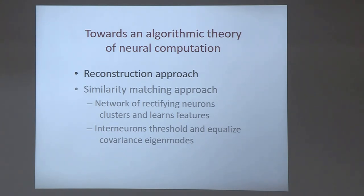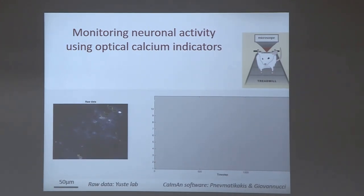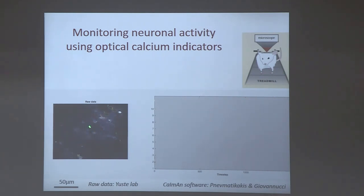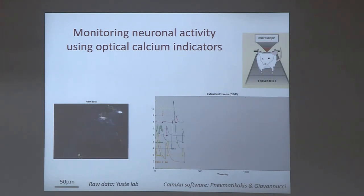To get us started, I want to show some experimental data. This is a video of the activity of neurons in the brain of a live behaving animal running on a treadmill in virtual reality, being shown visual stimuli. These are recordings of neurons in the visual cortex. As the video runs, you can see blobs corresponding to individual neurons lighting up and down. Different patterns light up at different time points because the animal is shown different visual stimuli.